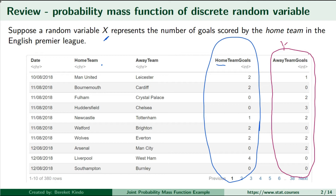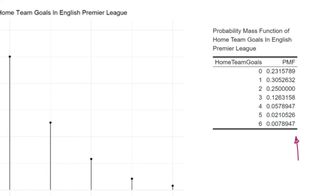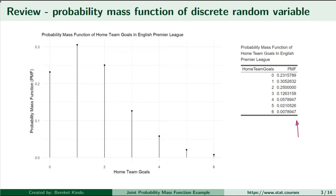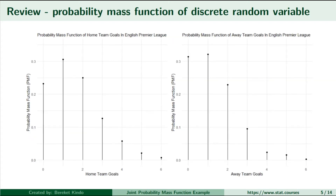Here's the probability mass function of the random variable X, which is the number of goals scored by the home team. Sometimes you can write probability mass functions of discrete random variables using a table. And sometimes you can visually see it — the larger the probability of observing a given value, the taller the line representing the mass at that specific point. As you can see, the probability of the home team scoring one goal is the tallest point mass. Similarly, you can have the probability masses displayed visually for the random variable Y, which represents the number of goals scored by the away team. Here's a side-by-side view of the PMF of X on the left and the PMF of Y on the right.